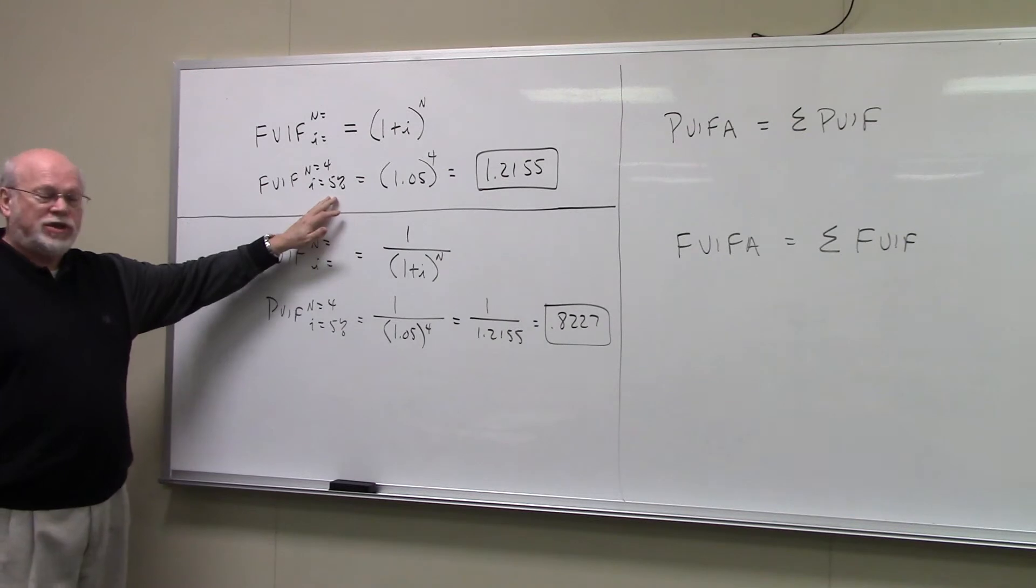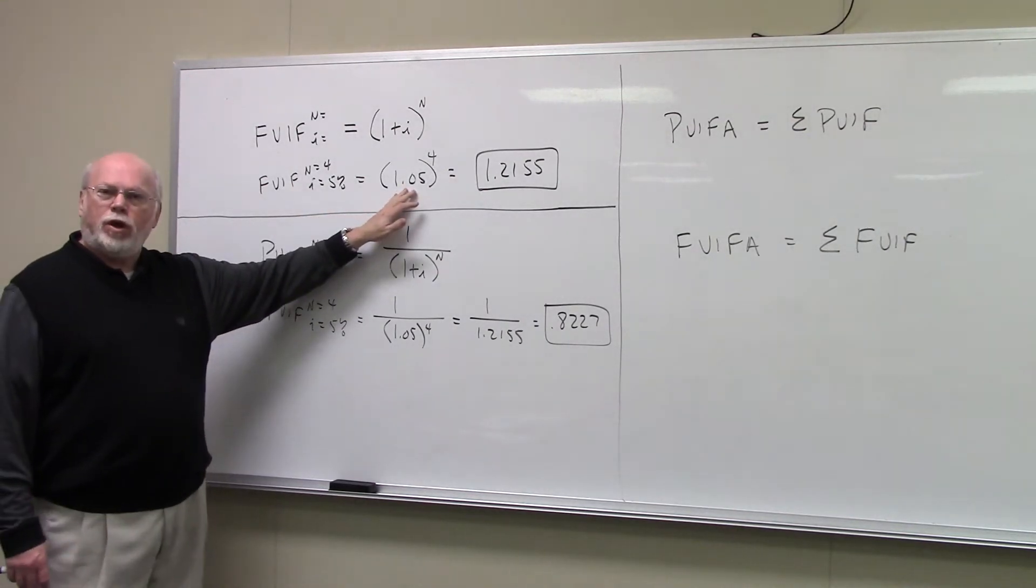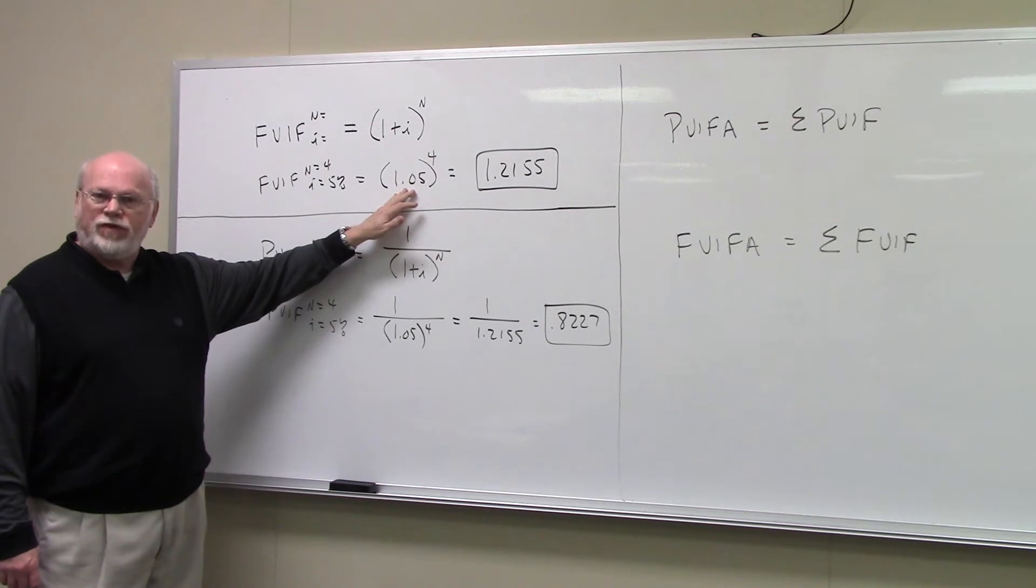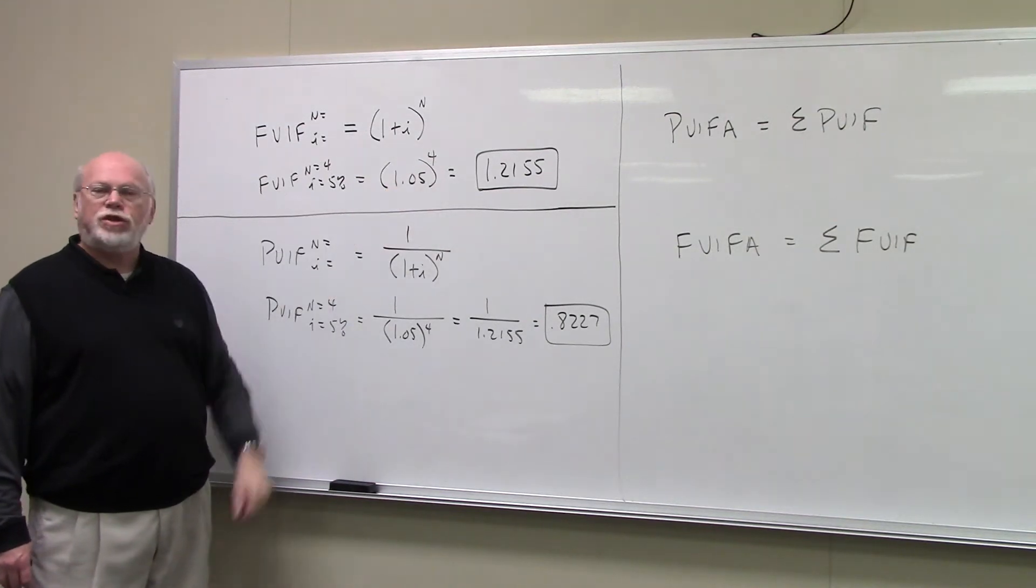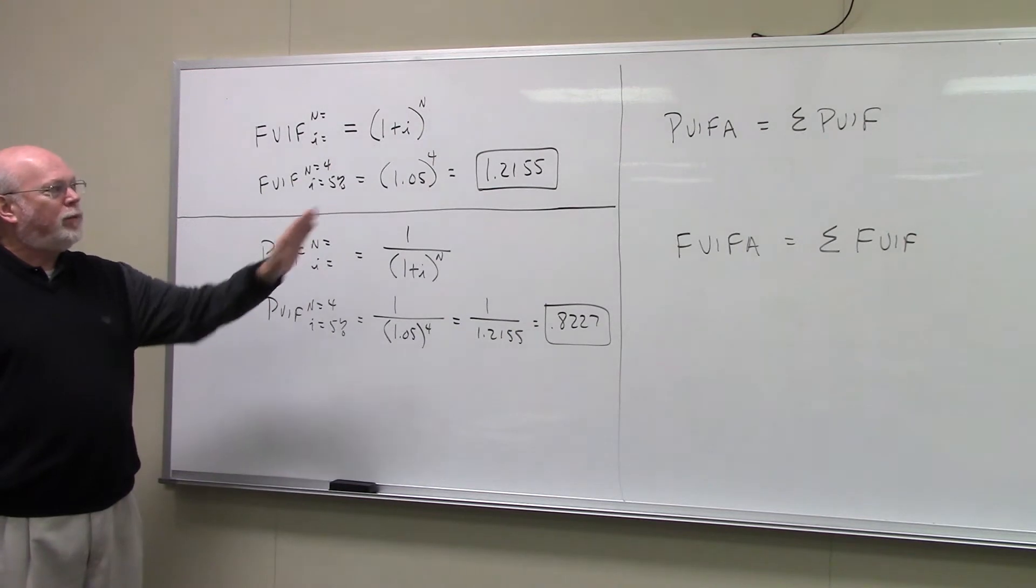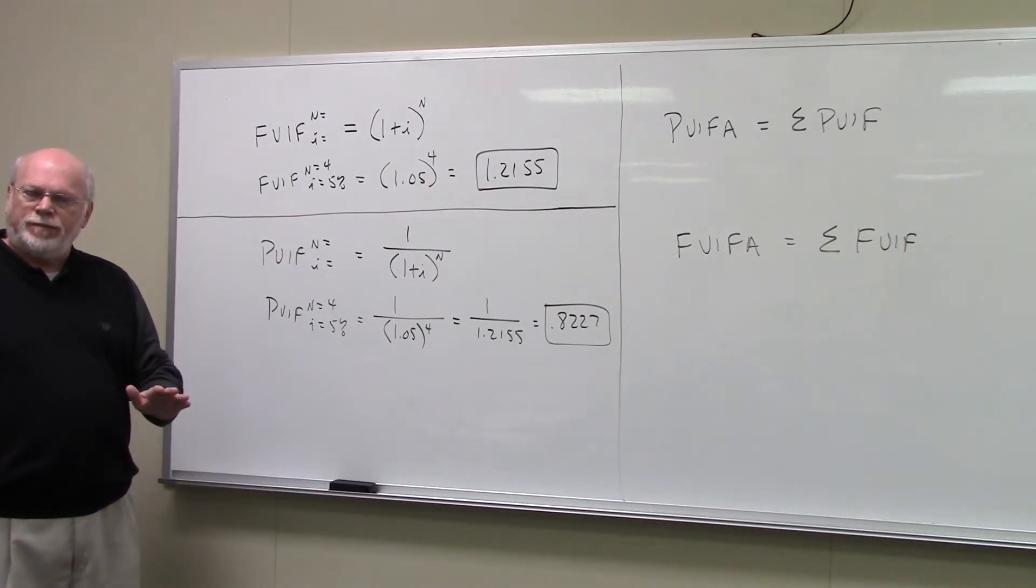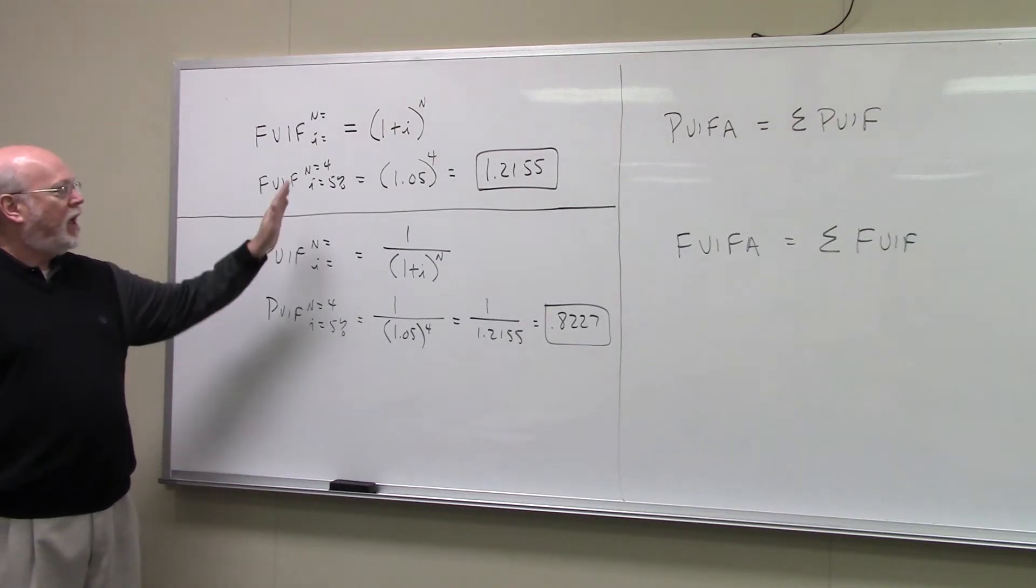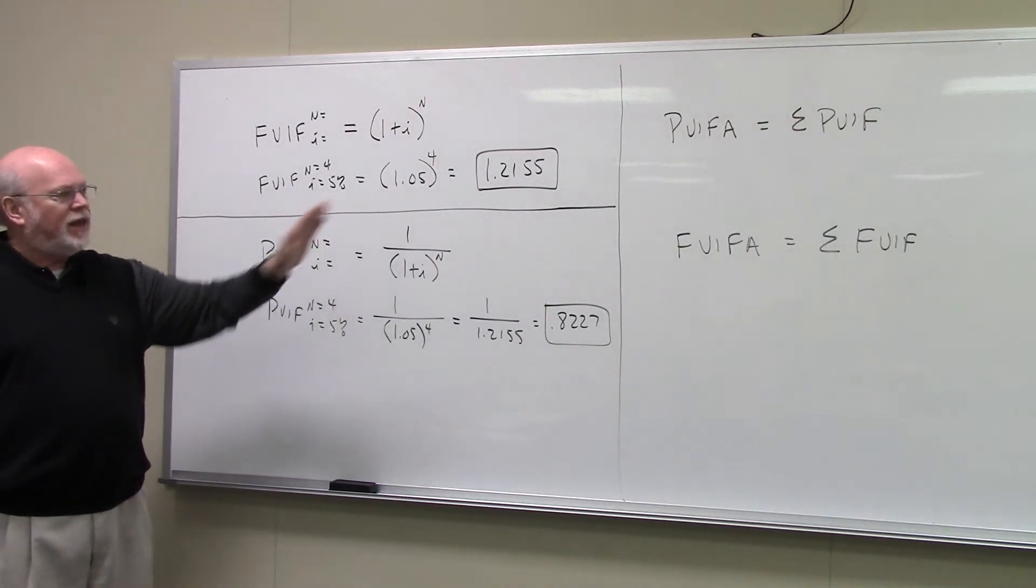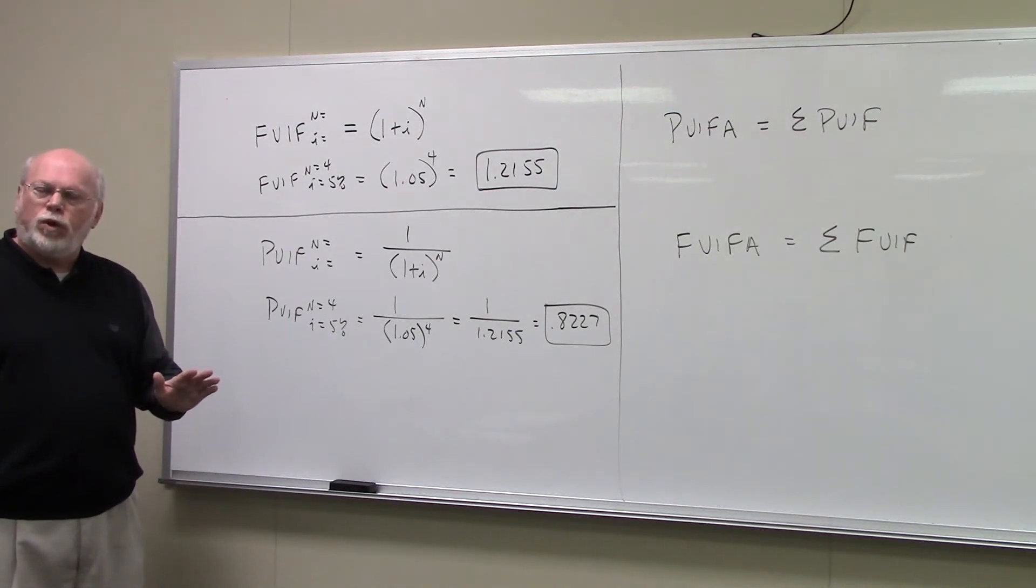If we wanted to find our future value interest factor for 4 and 5%, we'd take 1.05, .05 being the decimal equivalent of 5%, and raise it to the fourth power. You'd get 1.2155. If you go to your FVIF table and look up your FVIF at 4 and 5%, indeed you'll find 1.2155.